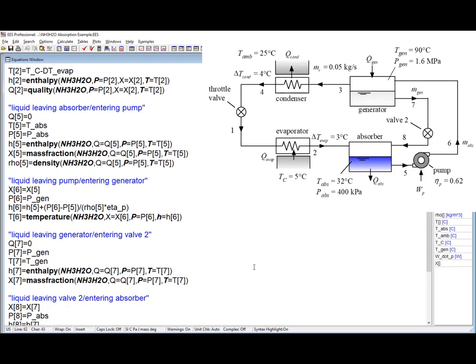This liquid passes through a pump where the pressure is increased to the generator pressure. The mass fraction across the pump cannot change. And the enthalpy or the specific enthalpy is increased across the pump. And that enthalpy increase is calculated assuming that the fluid is incompressible and then using the pump efficiency. So the properties at state 6 are obtained from X, P, and H.